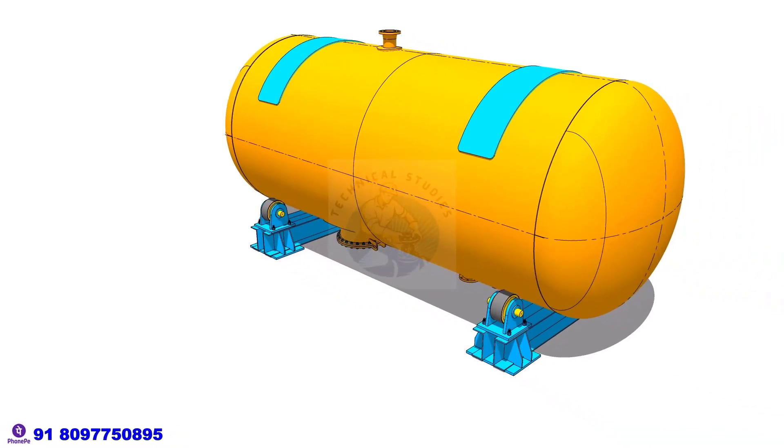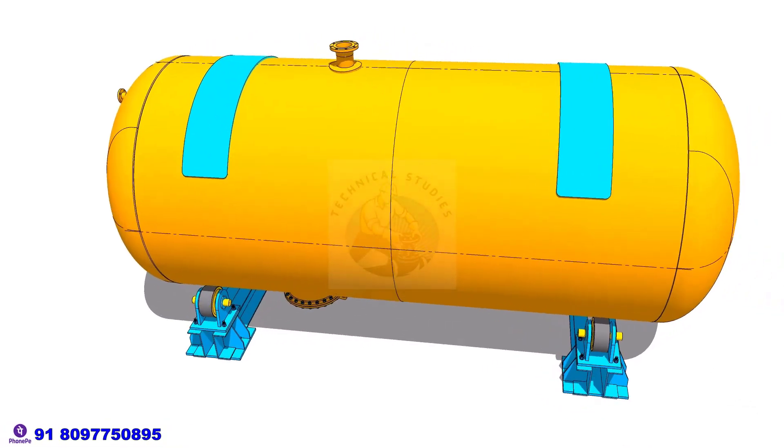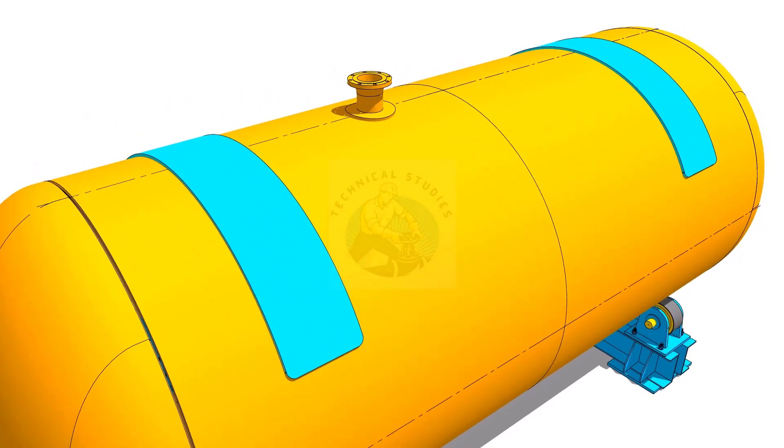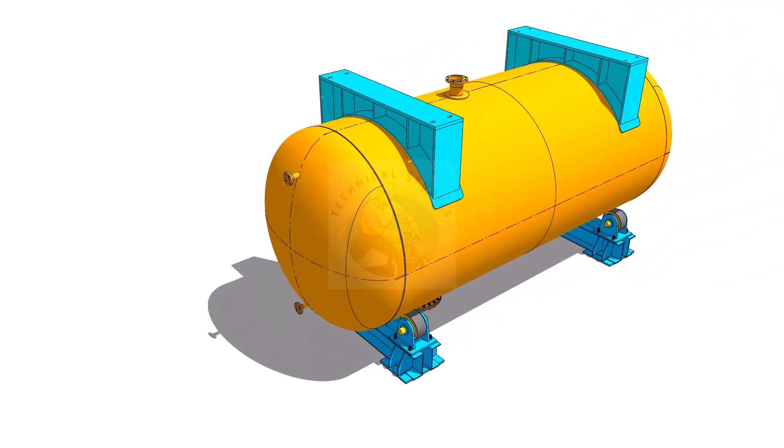Rotate the tank upside down. Install the pad plates and complete the welding. Install the saddles and complete the welding.